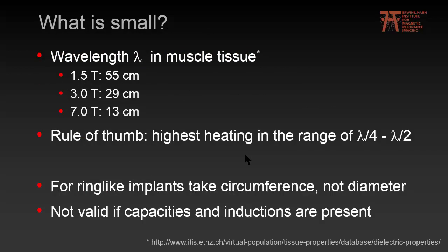What is meant with 'small' is of course with regard to the wavelength in human tissue. As field strength grows, the wavelength decreases, and as a rule of thumb, highest heating occurs in the range of quarter to half lambda. For ring-like implants, you should take the circumference, not the diameter. And if any capacitances or inductances are present, this could create a perfectly resonant micro-coil, making the simple size rule no longer valid.